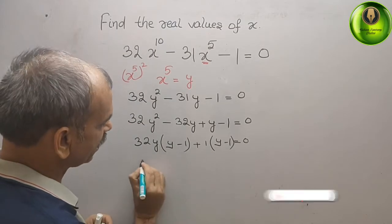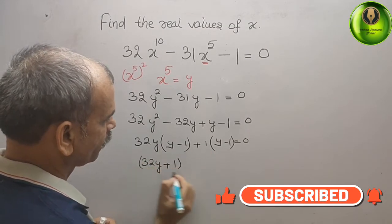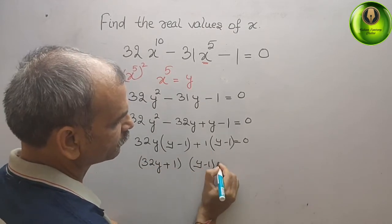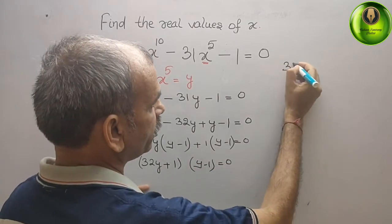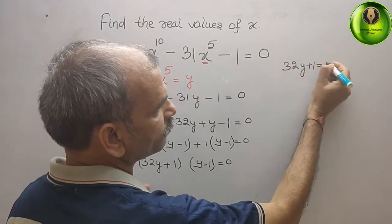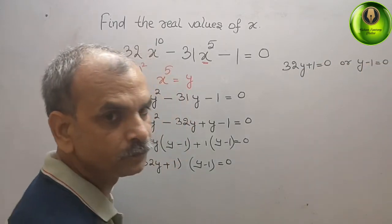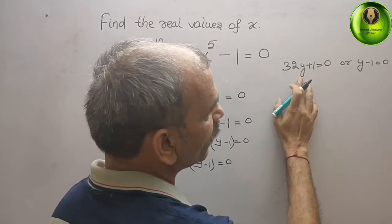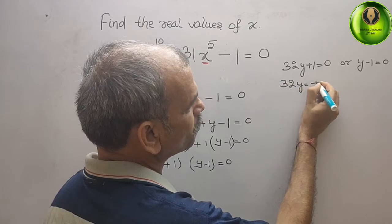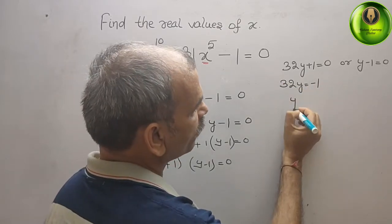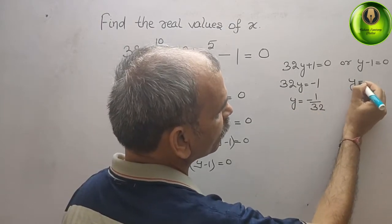Now your two factors are (32y plus 1) and (y minus 1), that gives you 0. That means 32y plus 1 equals 0, giving y equals minus 1 over 32. And from (y minus 1) equals 0, you get y equals 1.